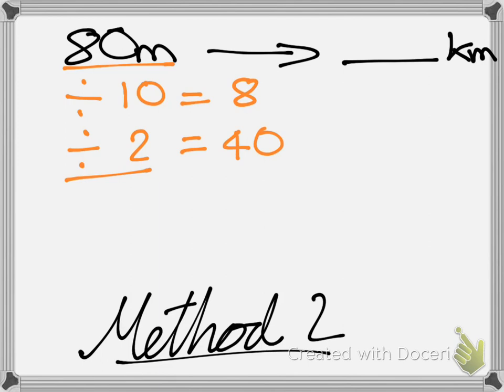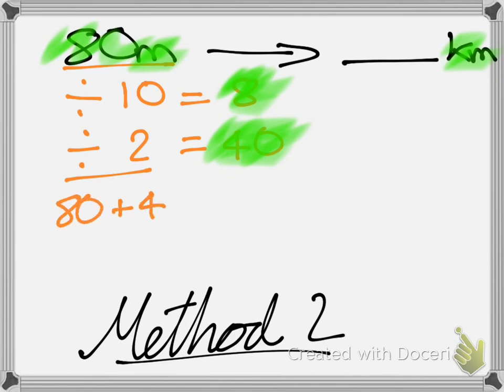When we were converting kilometers to miles, all we did was add these two numbers, 8 and 40, and that gave us the answer. But because I'm going from miles to kilometers, I'm expecting a bigger number here because kilometers are shorter. So what I have to add here is the 8, the 40, and this time the 80 together. So 80 plus 40, 120 plus 8, gives me 128.